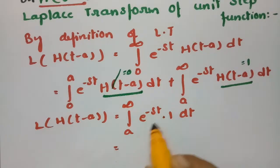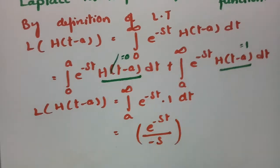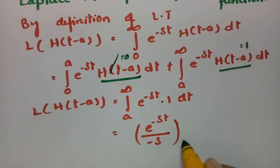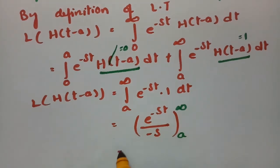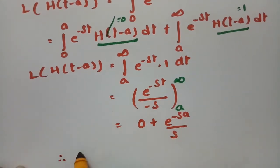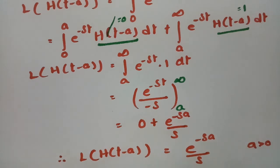The integration of e^(−ST) with respect to T gives e^(−ST) / (−S), evaluated between the limits A to infinity. Substituting the upper limit: e^(−∞) = 0, and subtracting the lower limit gives e^(−SA). Therefore, the Laplace transformation of the unit step function is equal to e^(−SA) / S, where A is a positive value.